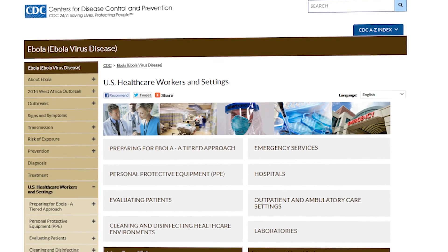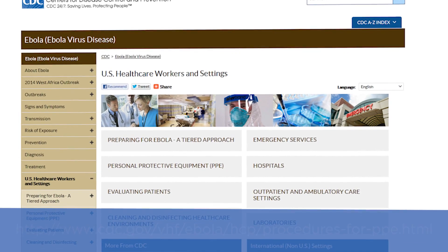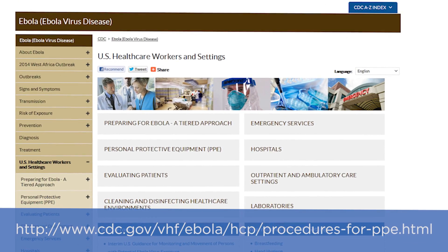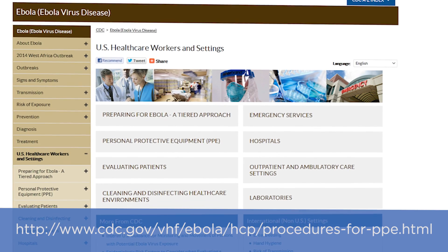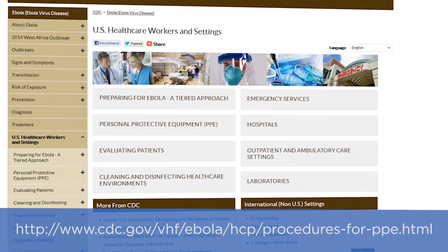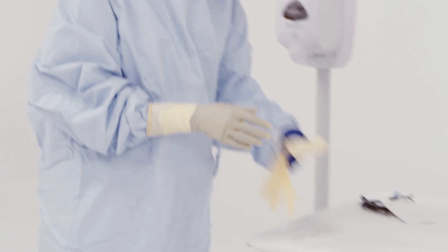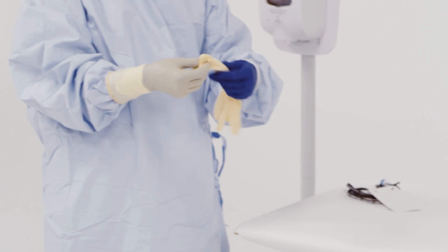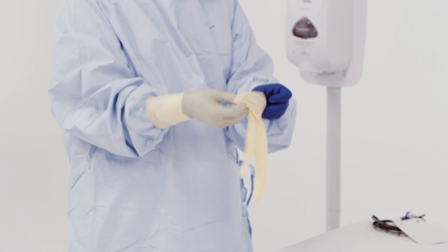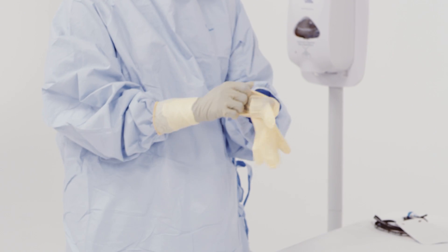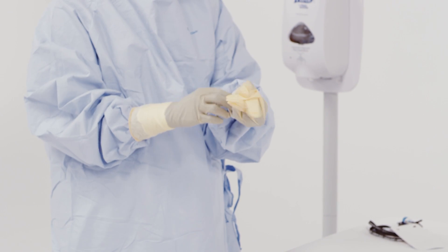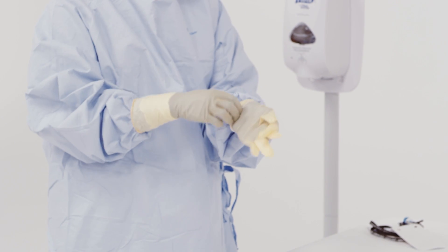Please refer to the section of the CDC website illustrating procedures for proper donning and doffing of PPE. If the patient is not able to ambulate, the triage or charge nurse should don PPE to transport the patient to the isolation room.